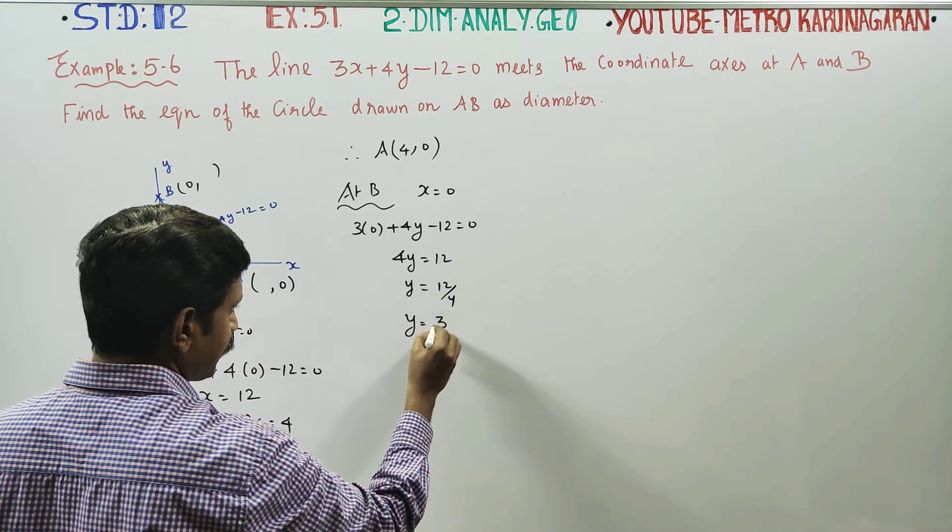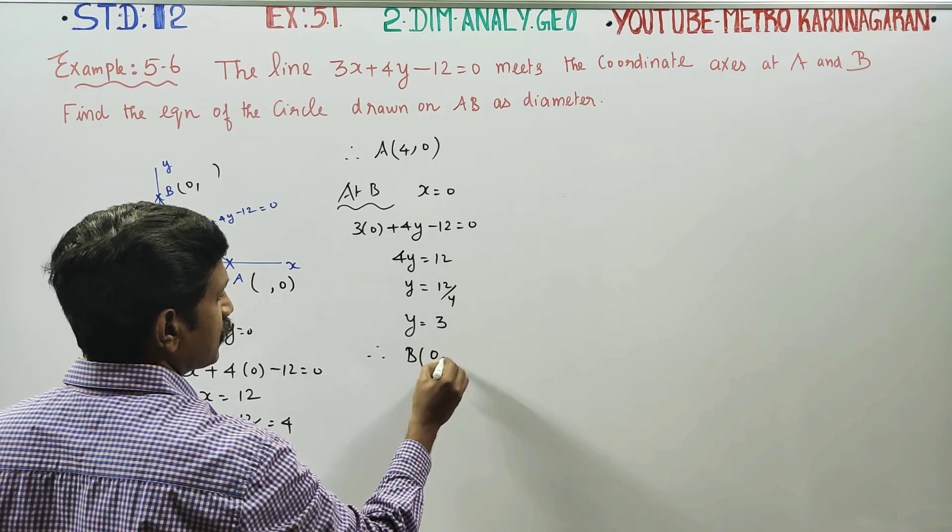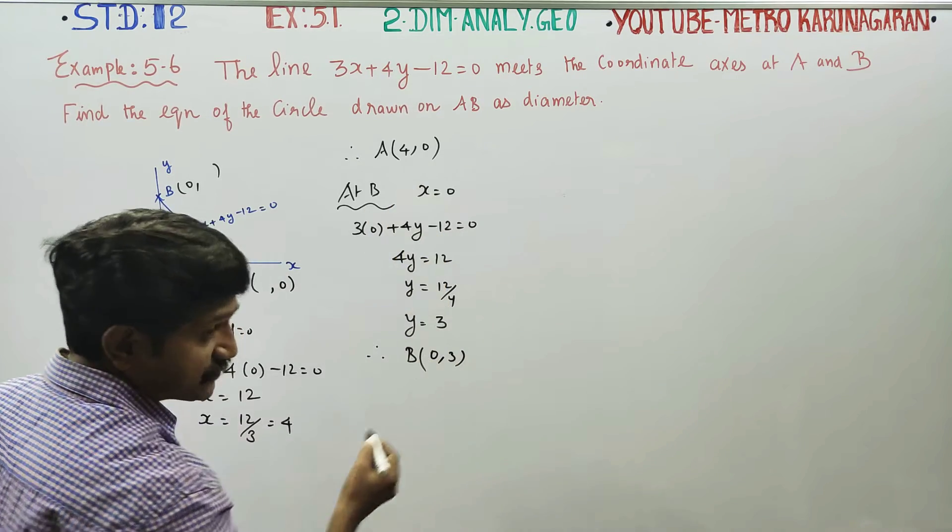Thus, point B is (0, 3). So we have A at (4, 0) and B at (0, 3).